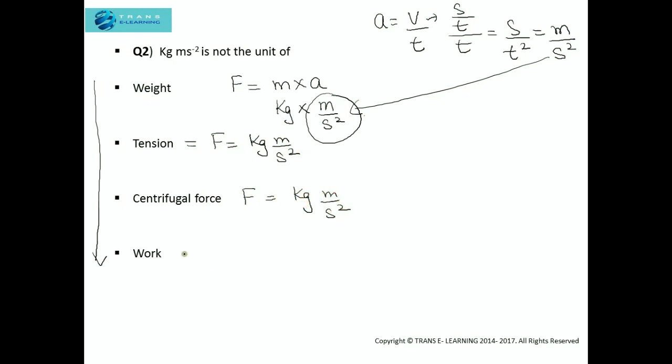Now let's see work. Work equals force times displacement. So we multiply force with displacement. It will not have the same units. Force is kg meter per second squared, and the fundamental unit of displacement is meter. So it will be kg meter squared per second squared.